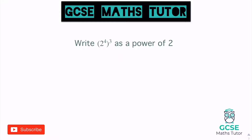Let's have a look at one more. So two to the power of four, all to the power of three, and it wants us to write this as a power of two. Let's think about what this means. Two to the power of four is two times two times two times two, and it wants us to do that to the power of three — or to cube it — which means to times it by itself three times.